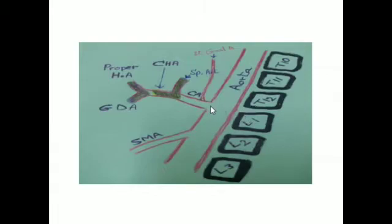This is the aorta at the level of T12-L1. The celiac artery arises from the aorta and divides into the splenic artery and the common hepatic artery — shown here as the seagull sign. The common hepatic artery then divides into the gastroduodenal artery and the hepatic artery proper.